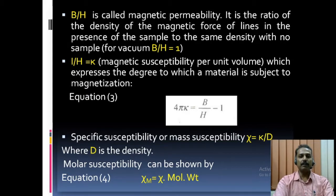Equation 3: specific susceptibility or mass susceptibility, chi is equal to kappa by D, where D is the density. Molar susceptibility can be shown by equation 4. Chi M is equal to mass susceptibility into molecular weight.